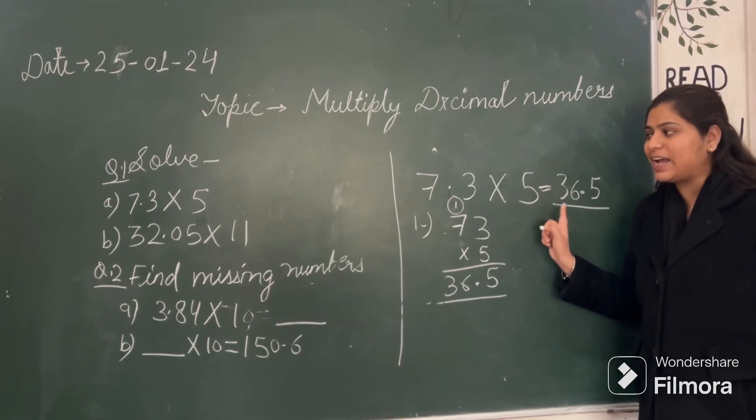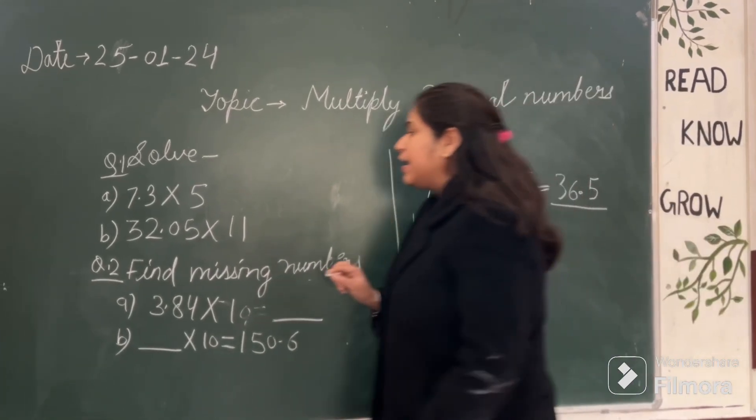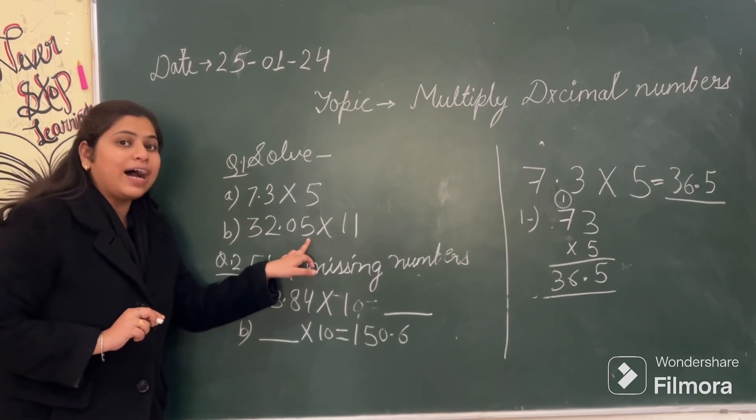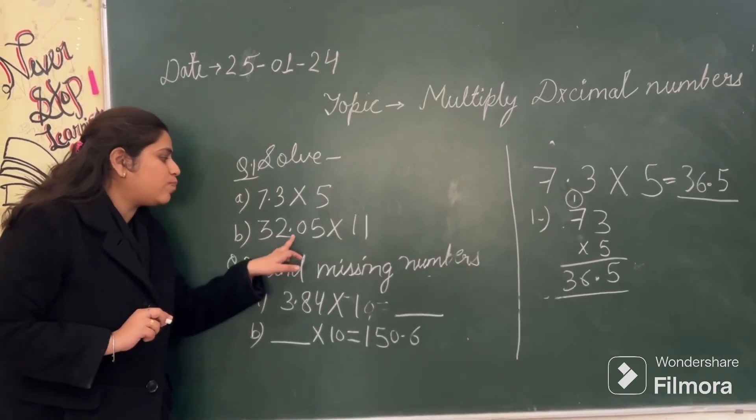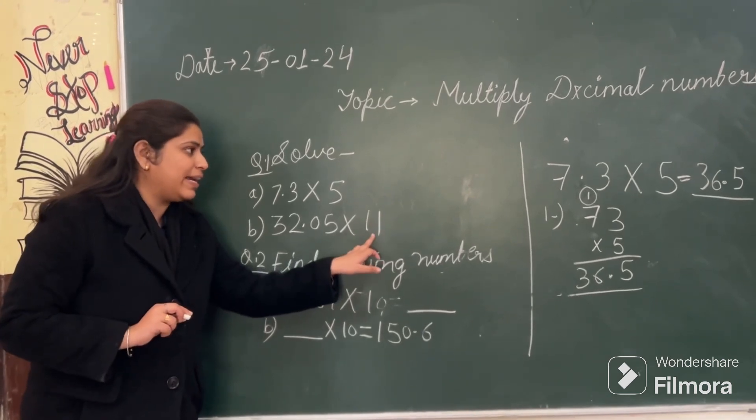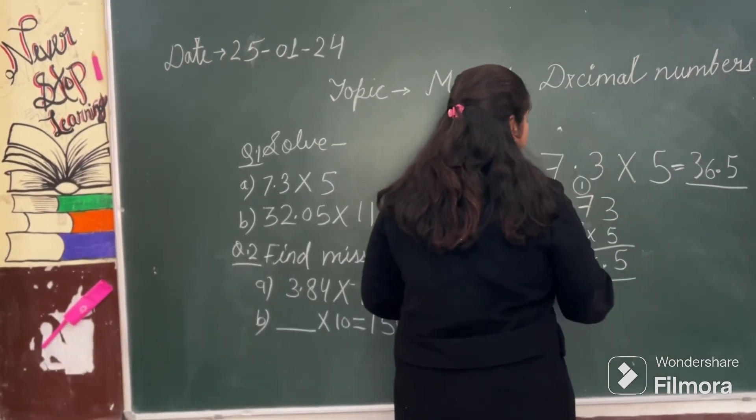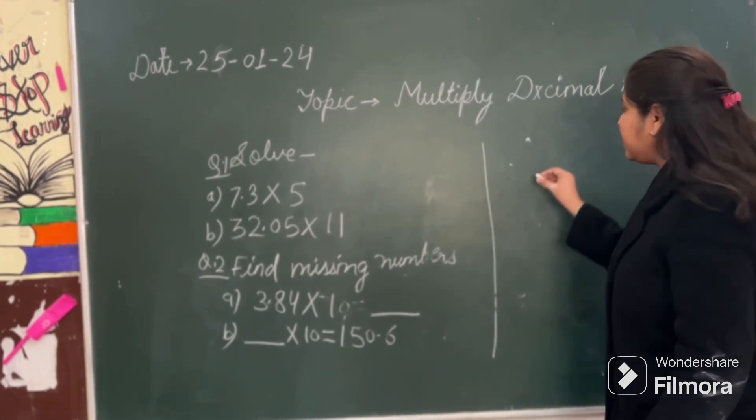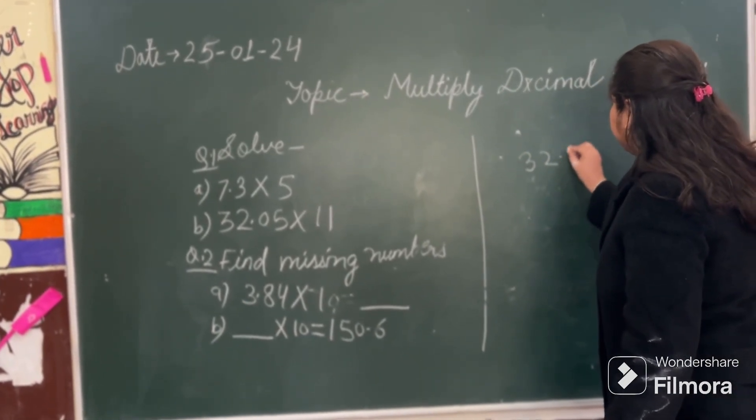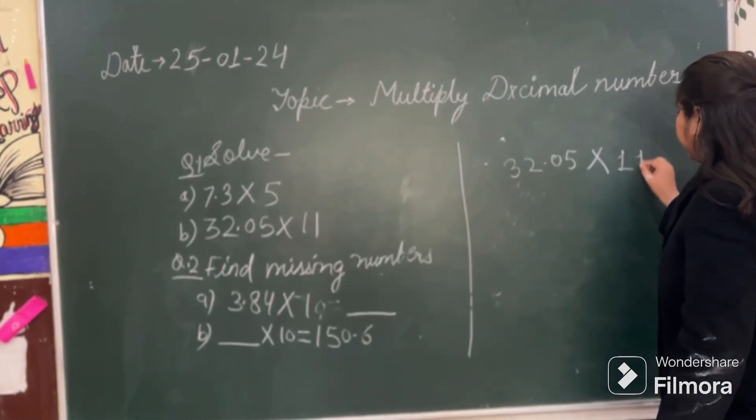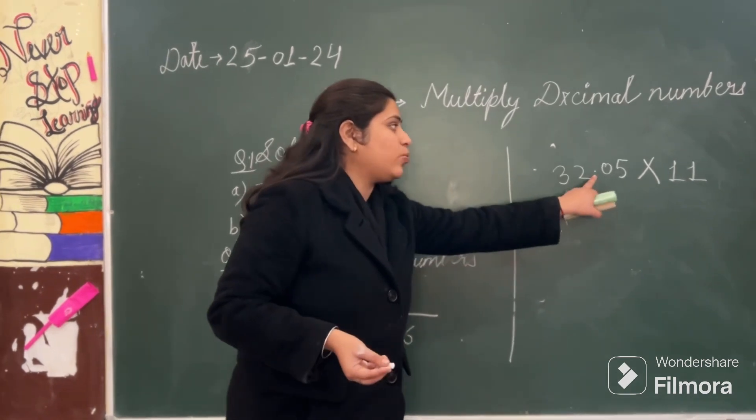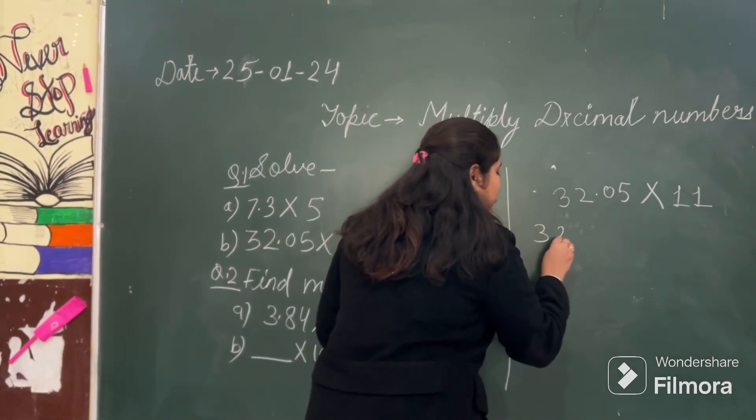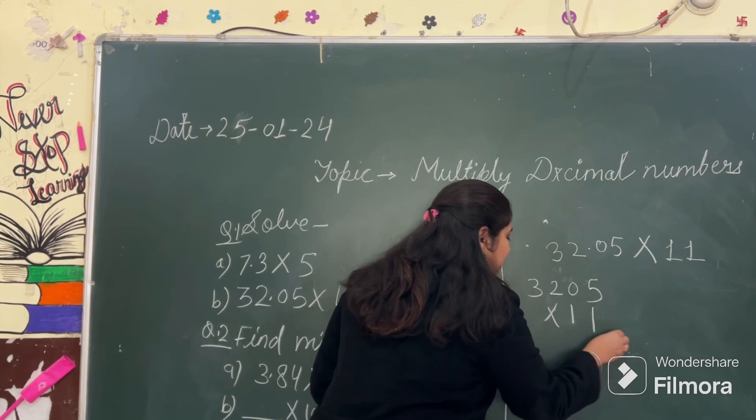So I hope you have understood by the first part how to multiply a decimal number. Now here is second question where there are two places given. Tenth also given and hundredth also given. Great. So 32.05 multiply by 11. Let's see how we will do this. The question given here is 32.05 multiplied by 11. So what is the first step? First step is to ignore this decimal point. And let's multiply the numbers as it is. So it is 3,205 multiplied by 11.